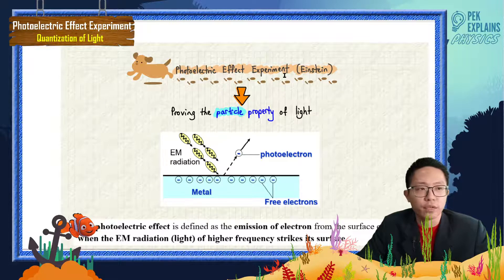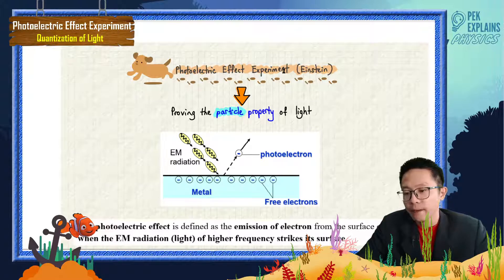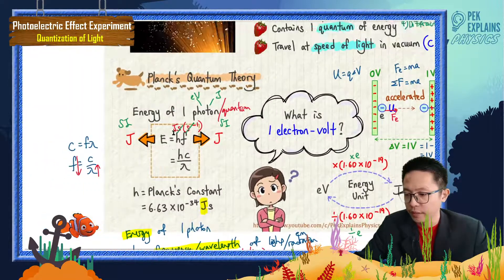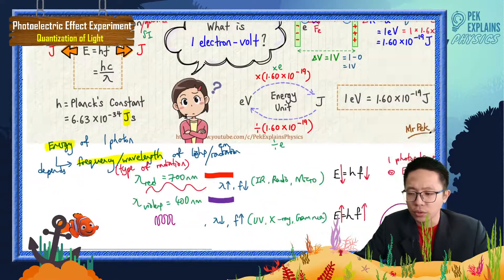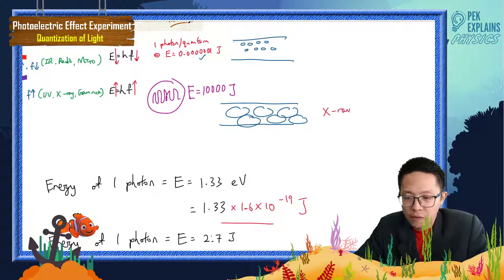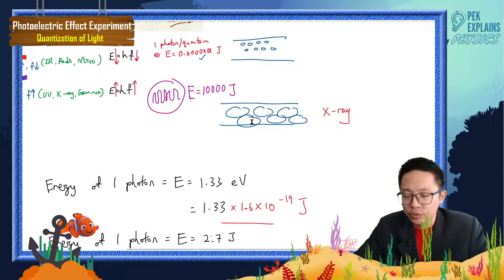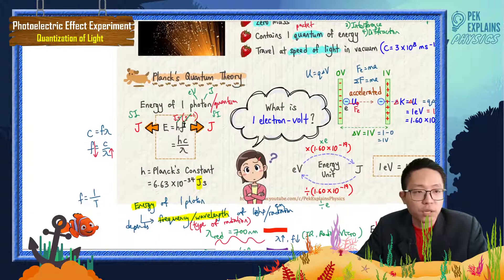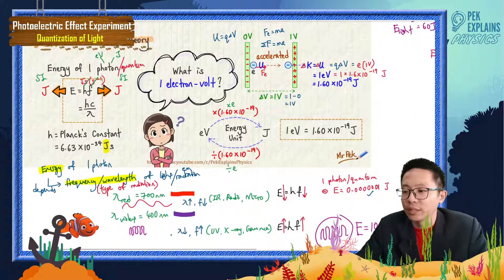Let us continue with the photoelectric effect experiment. Before we continue, I want to summarize again about the energy of one photon. The energy of one photon is equal to hf. Imagine this ray — let's say gamma or x-ray. This x-ray has how many photons? One, two, three, four, five, six — you have six photons. Each photon has energy equal to hf, or hc over lambda.